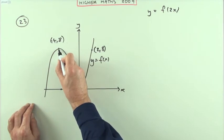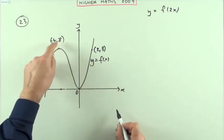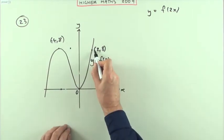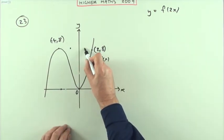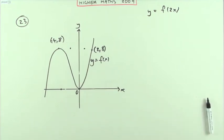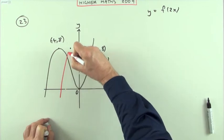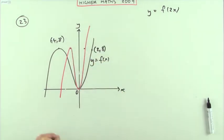This point here at negative 4, 8 will still stay at 8 but instead of negative 4 it'll now just be at negative 2, 8. This point will still stay at 8 but instead of being at 2 it'll now just be at 1. So the new graph is going to follow the same pattern but go through it like this then. Down and then back up this way.